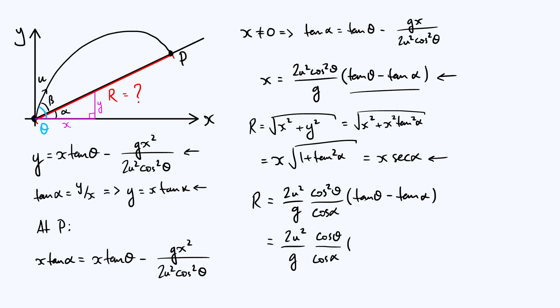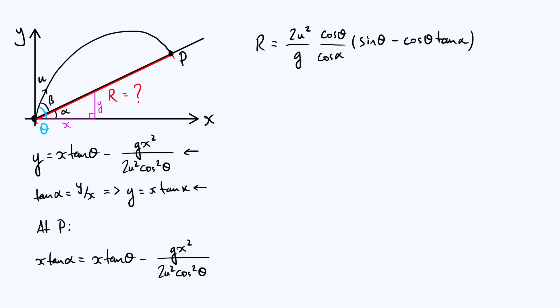The reason I'm going to do that is because we can apply the identity that sine theta is tan theta times cos theta, and so this first term in the brackets is going to be sine theta. Our second term—well we've got different angles so we can't do much—we'll just leave it as cos theta times tan alpha. Let's see how much simpler we can make this expression look.